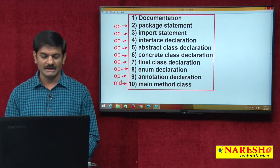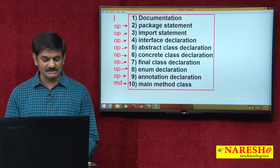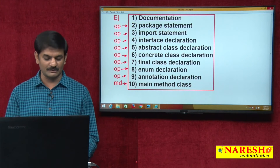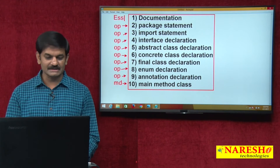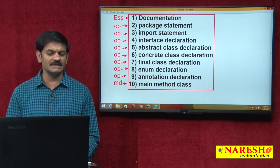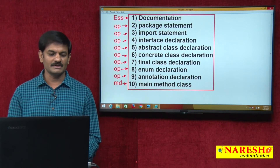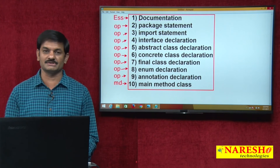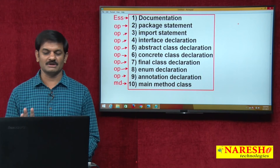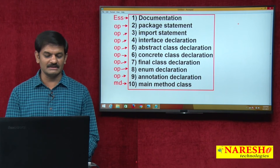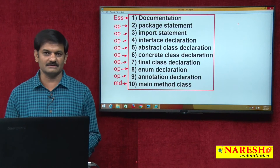If you plan to create one Java file and want to compile and execute it, the main method class is mandatory. Now, regarding the documentation section — documentation is not mandatory, not optional. I would like to call it essential. Why essential? It is important to provide documentation so other people know what you are writing. So I do not say mandatory, I do not say optional — it is just essential. This is the basic idea on Java source file structure. Among the 10 members, we know what is mandatory, optional, and essential.